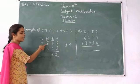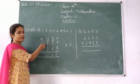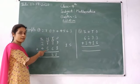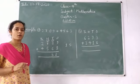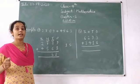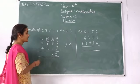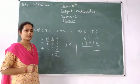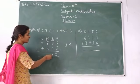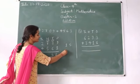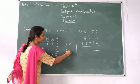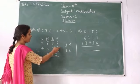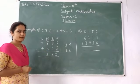Hundreds place: one plus seven — we get eight. And eight plus five — five numbers forward from eight — we get thirteen. For thirteen, write three at the hundreds place, and carry one forward to the thousands place.